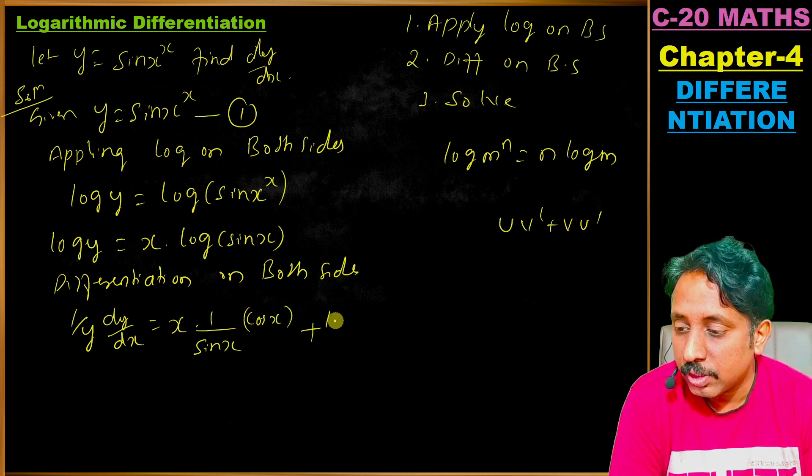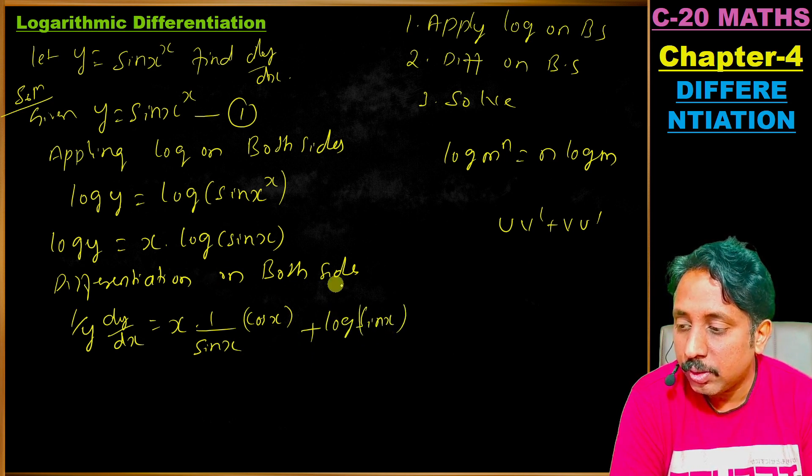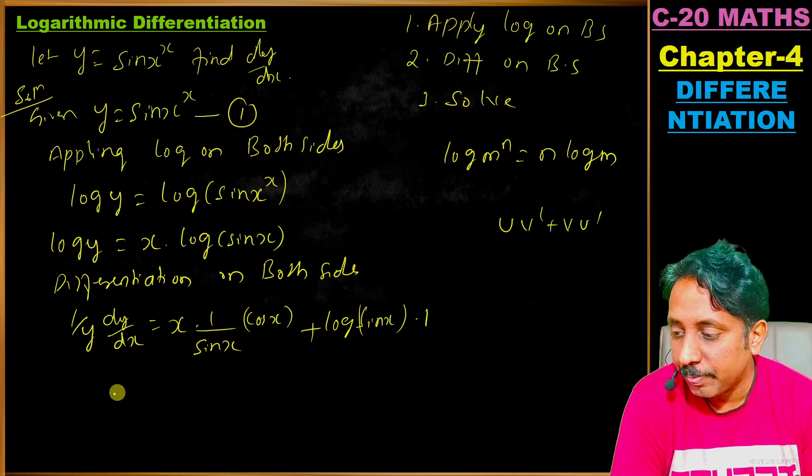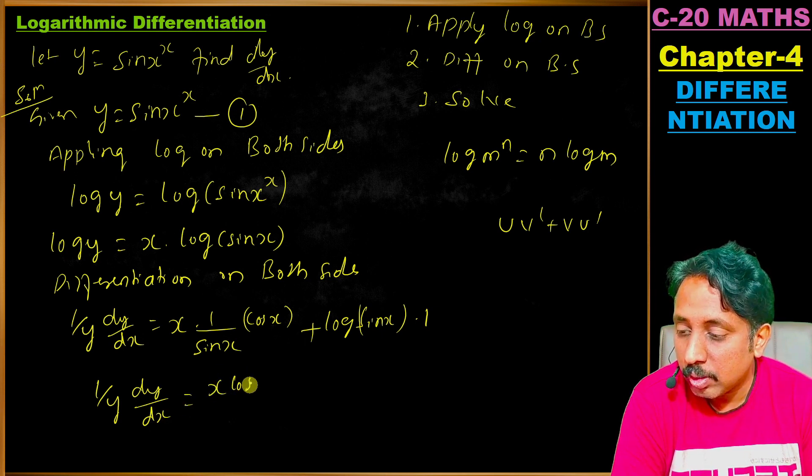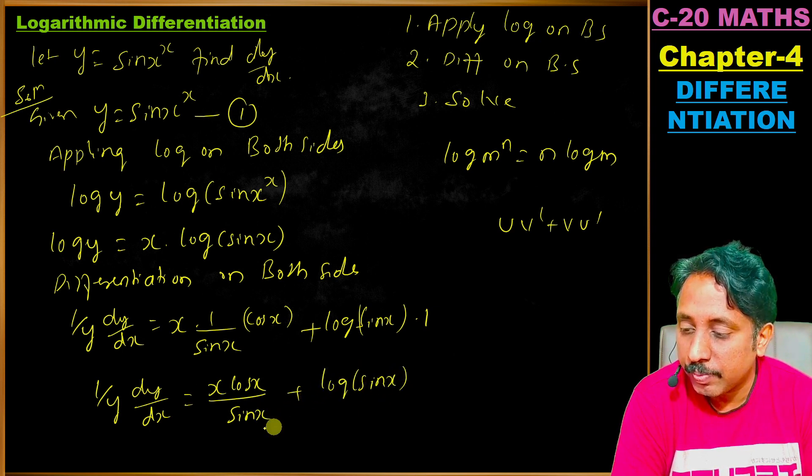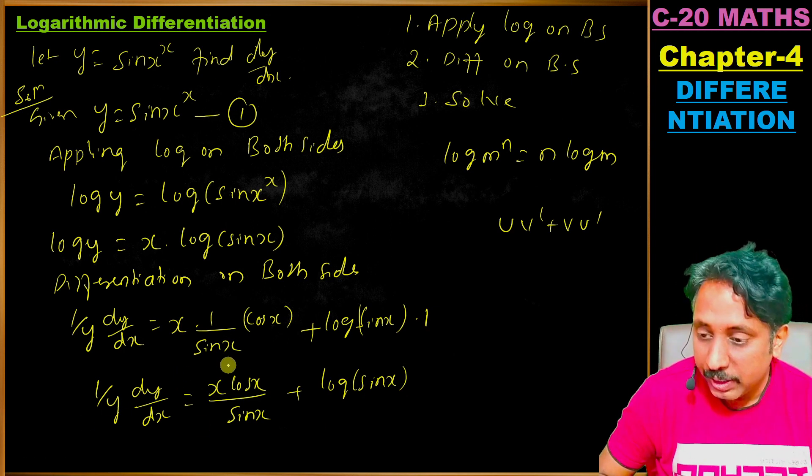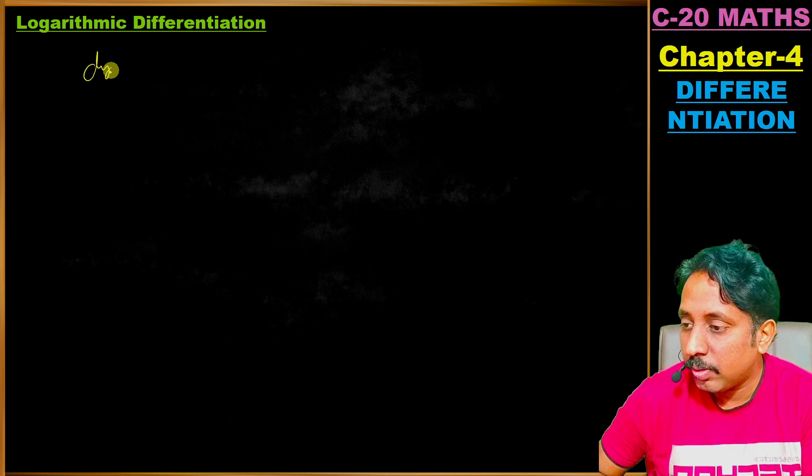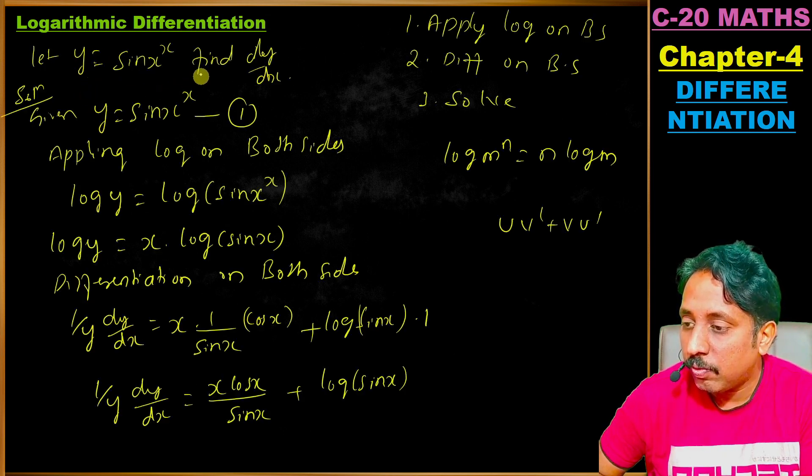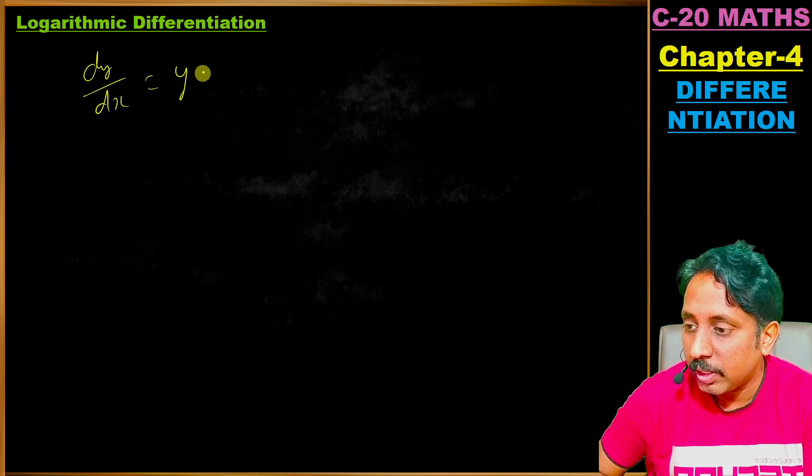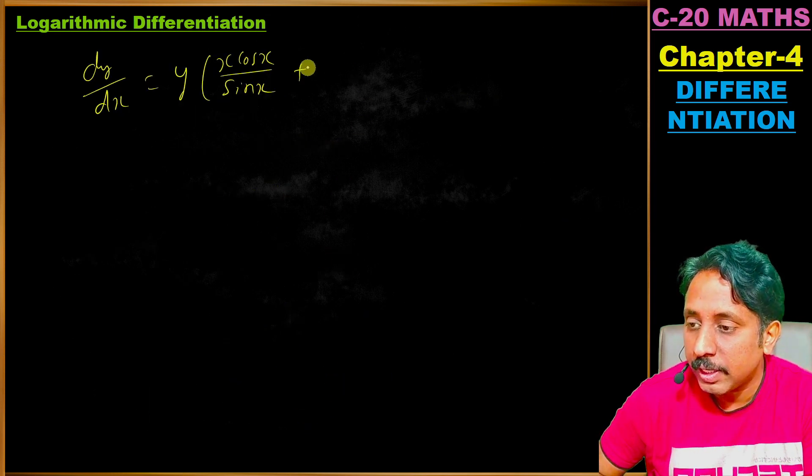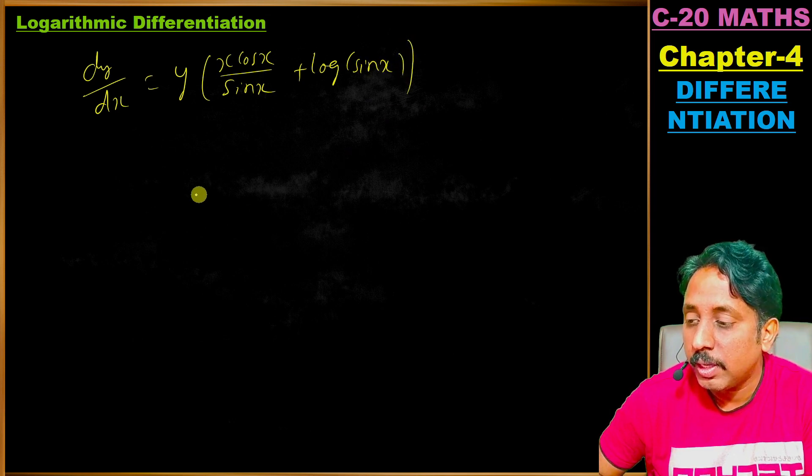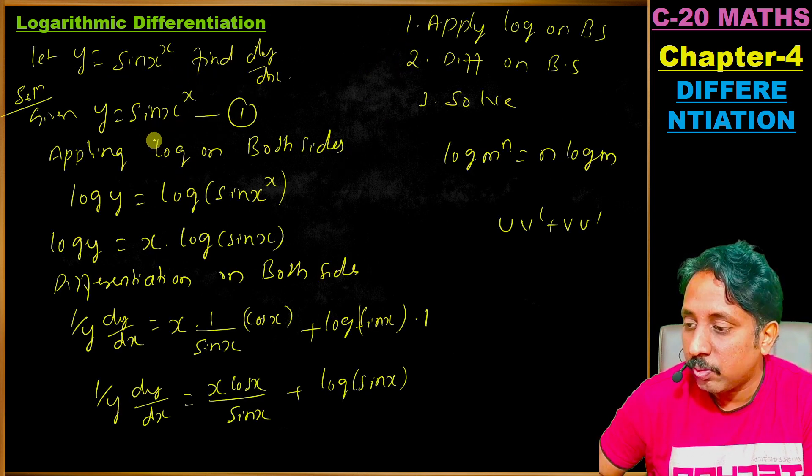So we get 1 by y times dy by dx equals x cos x divided by sin x plus log of sin x. Therefore dy by dx equals y times (x cos x divided by sin x plus log sin x).